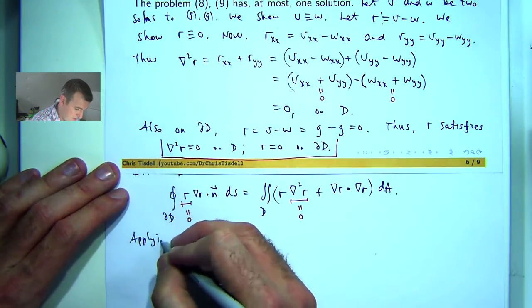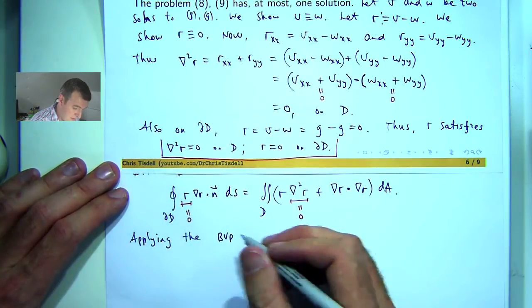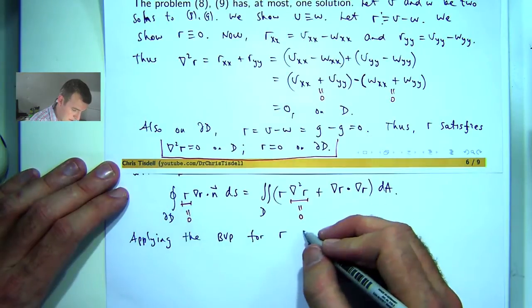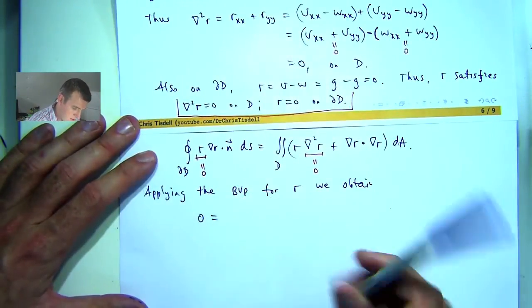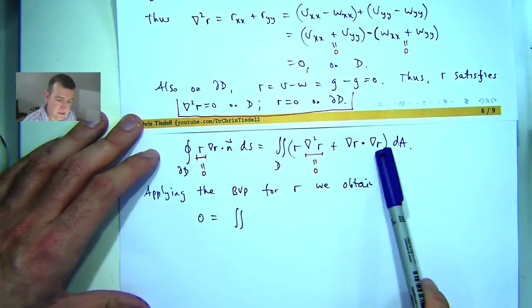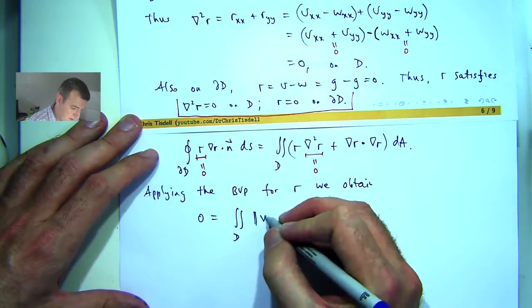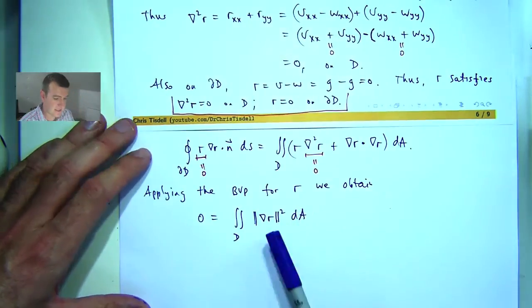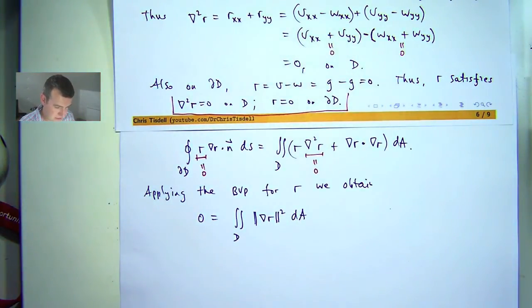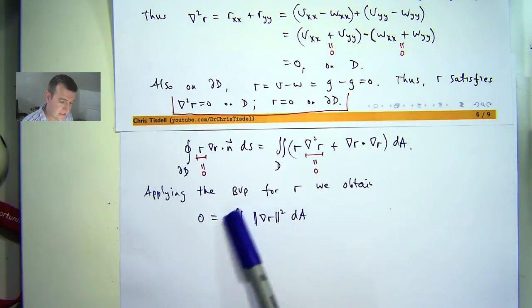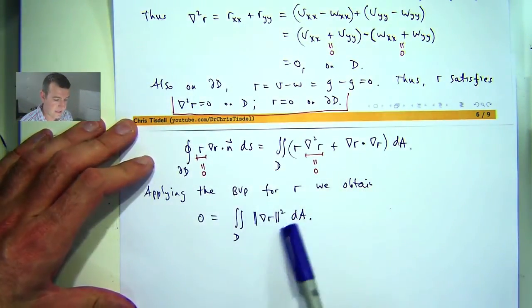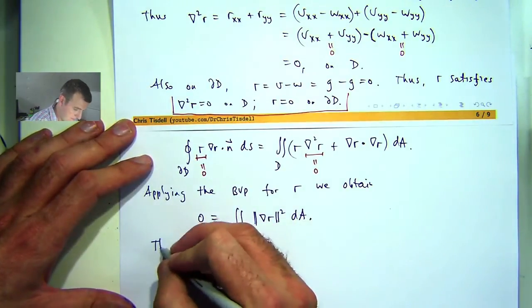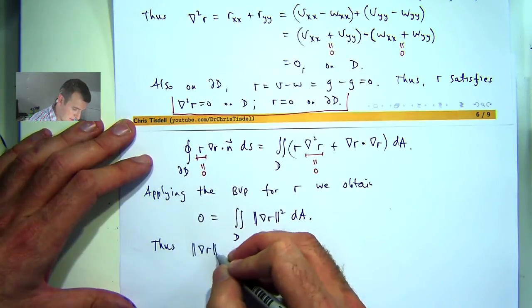So we apply the BVP for R, we obtain the following. 0 equals the following. Now, here we've got something dotted with itself. So I can write it in the following way. In particular, the integrand is non-negative and this works for essentially all regions D. So what does it mean? You've got an integral of something that's non-negative that's always equal to 0. Well, this can only happen if the integrand is 0.